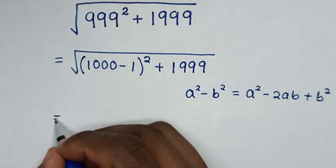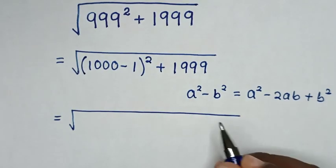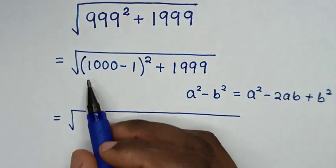Then it will be equal to square root of a square. So it will be 1000 square.